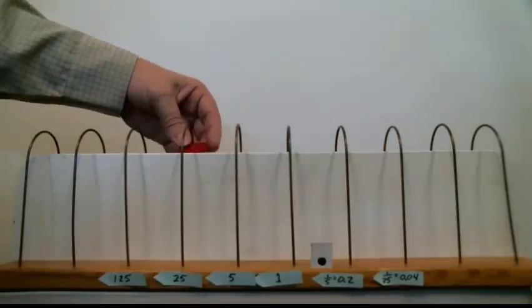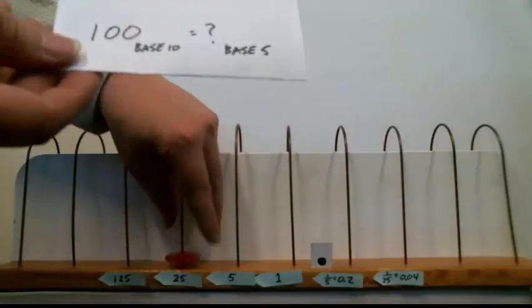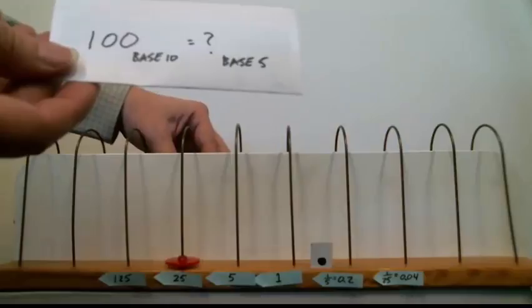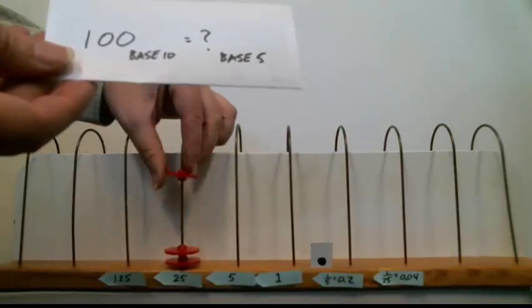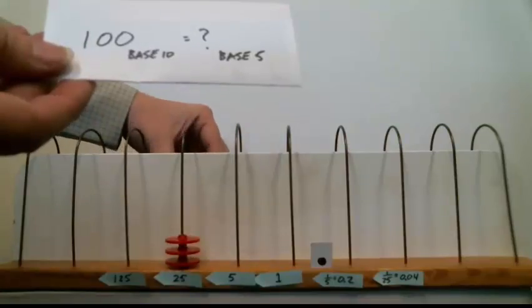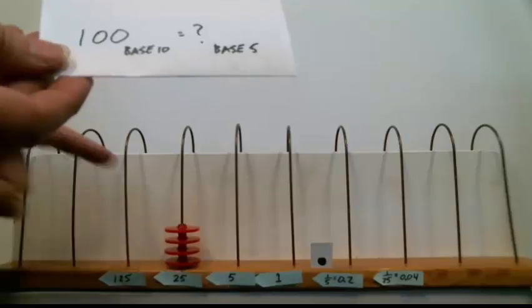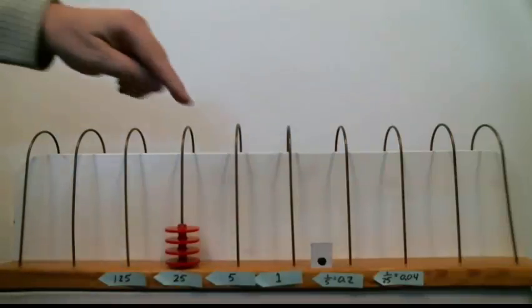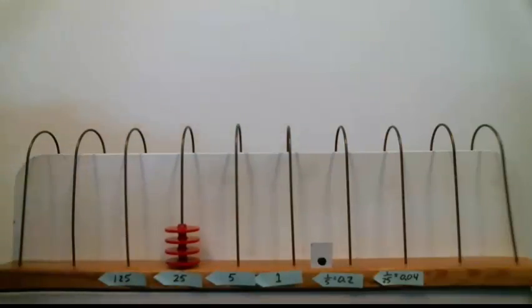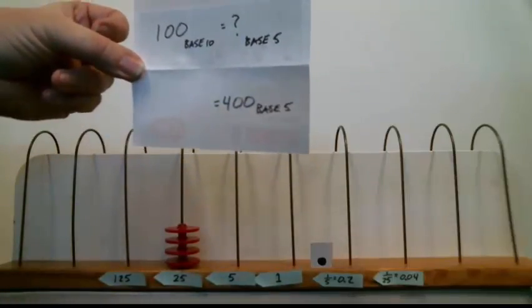So you start pulling beads across and count up by 25 until you get to a number less than or equal to 100. That's 25, that's 50, that's 75, and that's 100. So I've counted 4 beads at 25 each, that's 100. What is that in base 5? Well, I have 4 beads on the 25s and 0 and 0. So 100 in base 10 is represented as 400 in base 5.